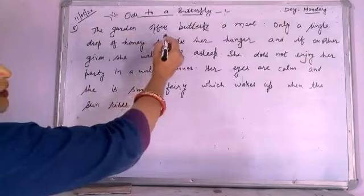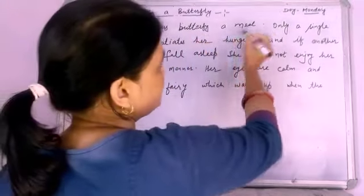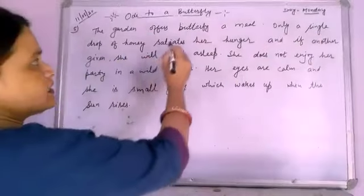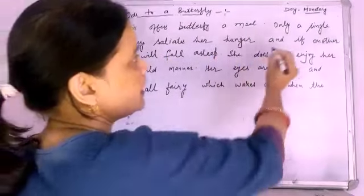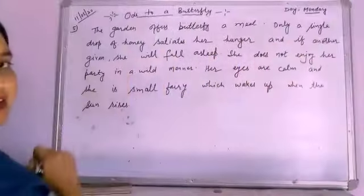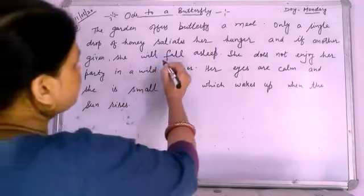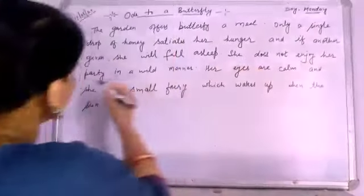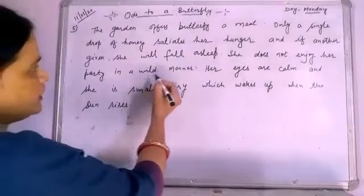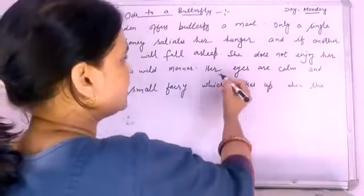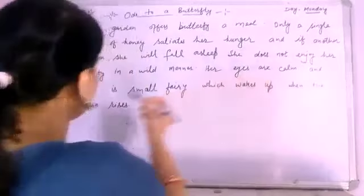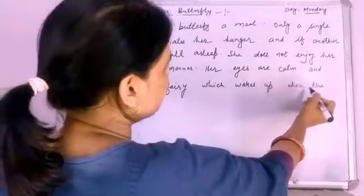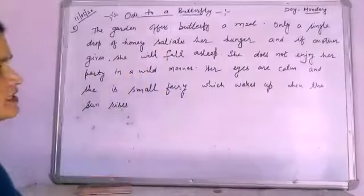The garden offers the butterfly a feast. Only a single drop of honey shall satisfy her hunger, and if another is given, she will fall asleep. She does not enjoy her pleasures in a wild manner. Her eyes are calm and she is a small fairy which wakes up when the sun rises.